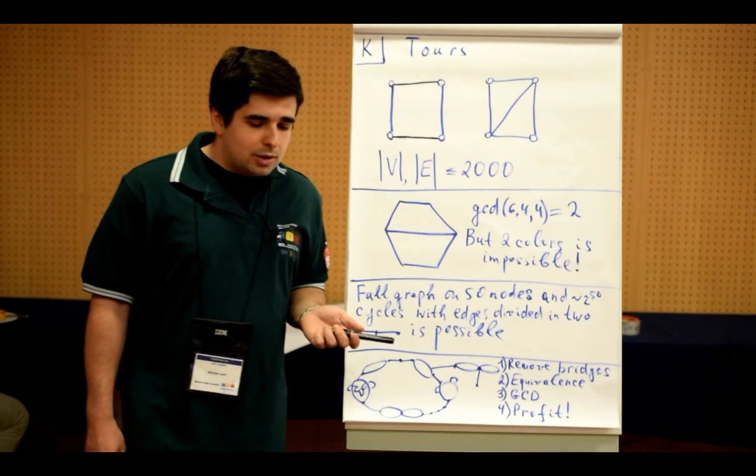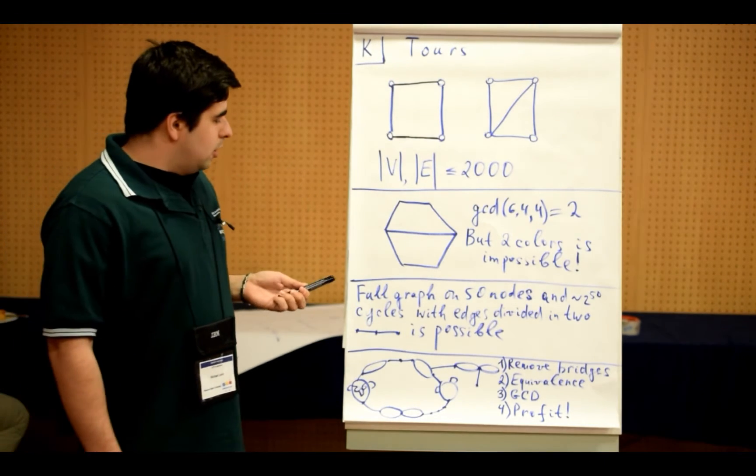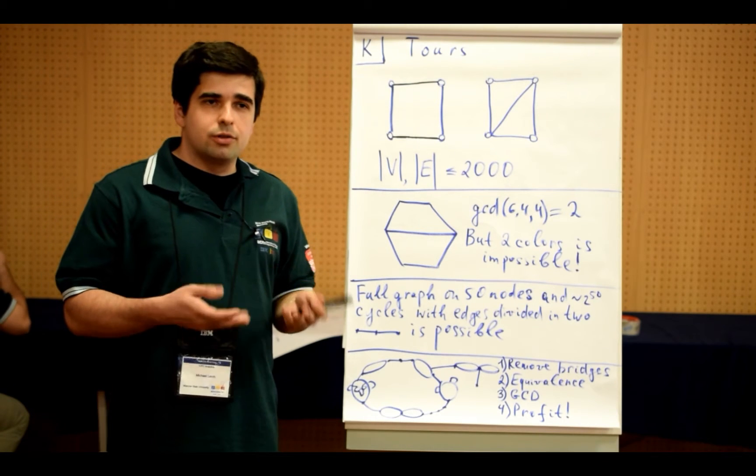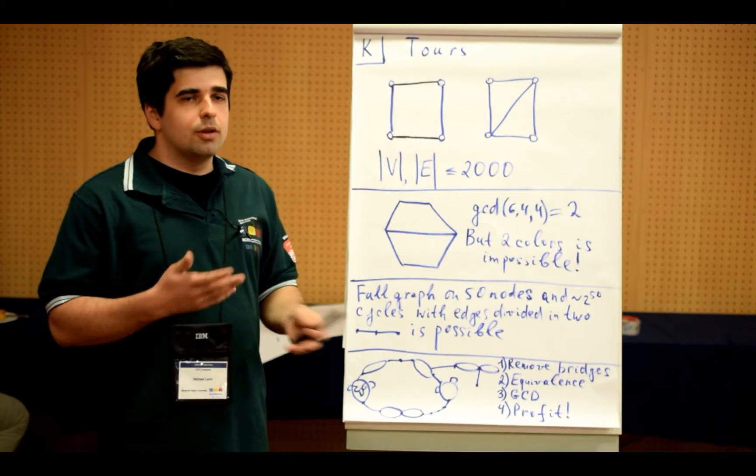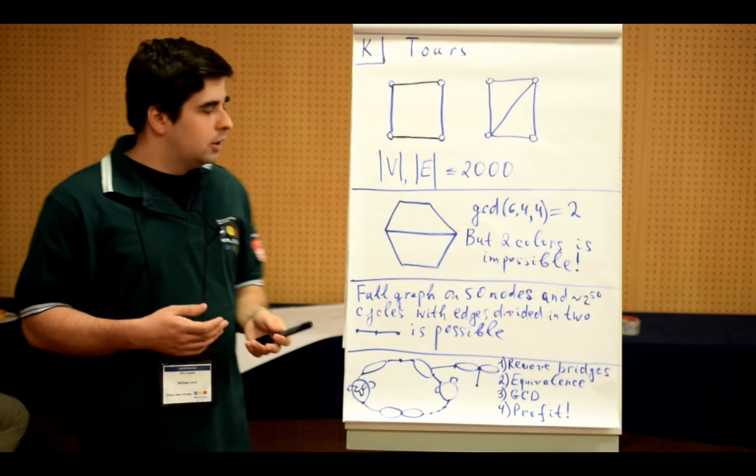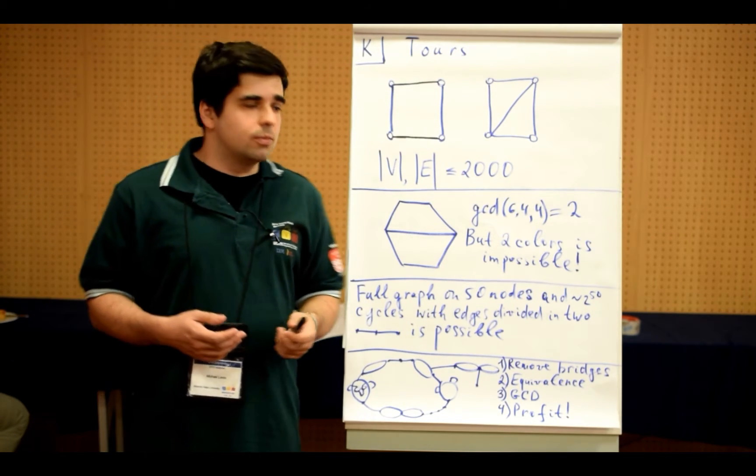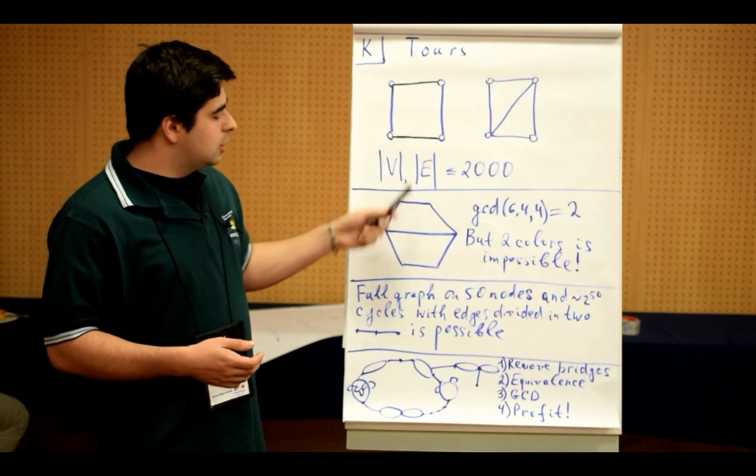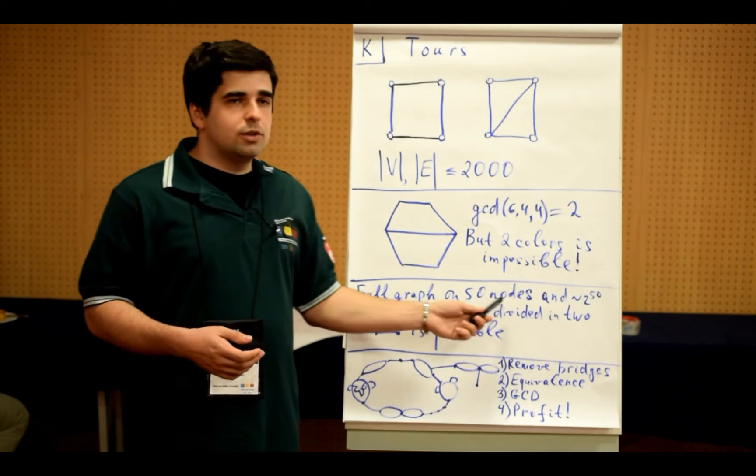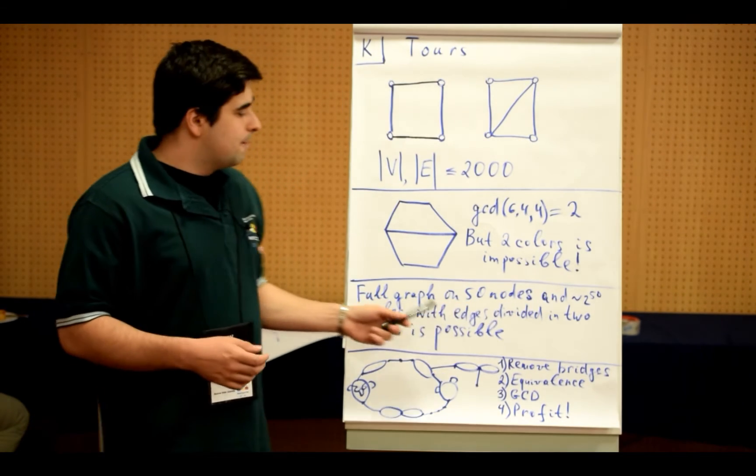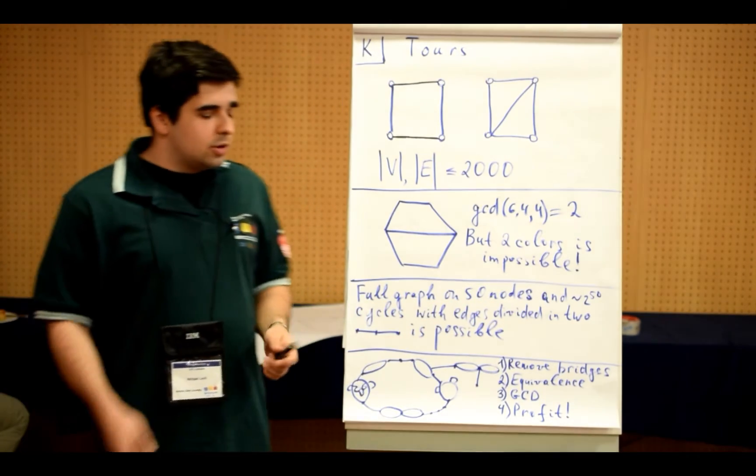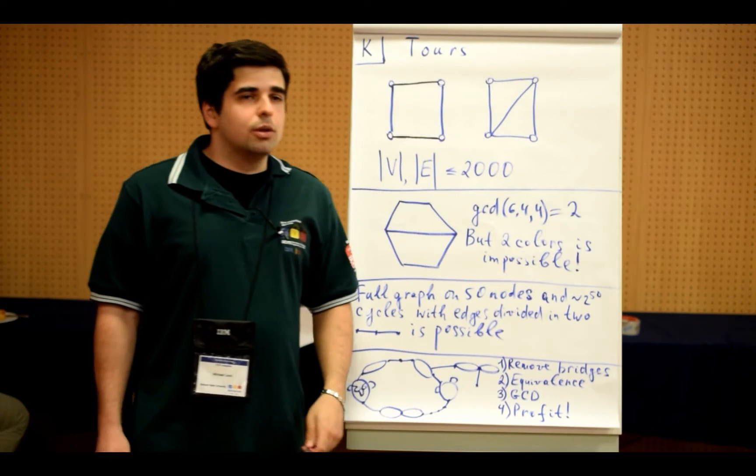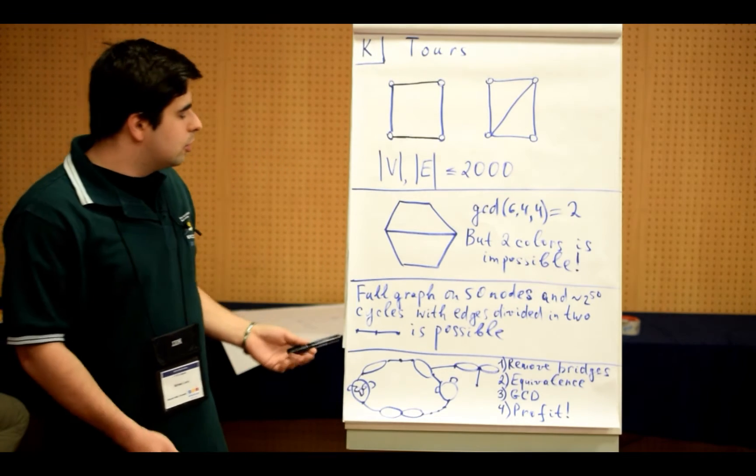One other thing you could do is you could consider all cycles of the graph and then write a system of linear equations to check whether this number of colors is possible or not. But it will be too big of a system because actually with these constraints, a full graph on 50 nodes and even more is possible. Full graph on 50 nodes is not that interesting because the GCD of all cycle lengths will be one and that is easy to show.